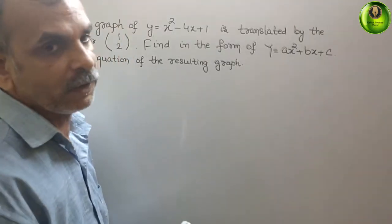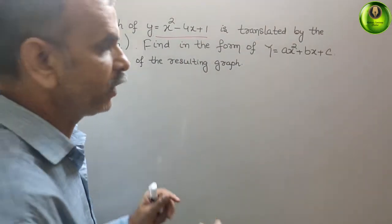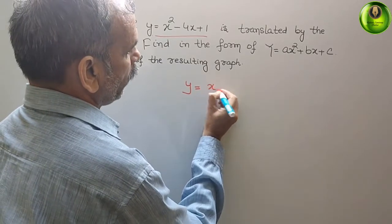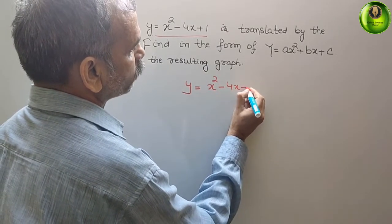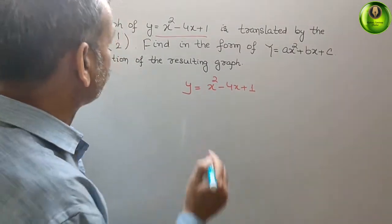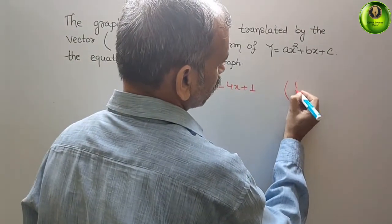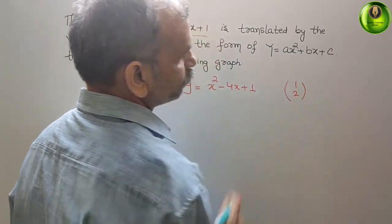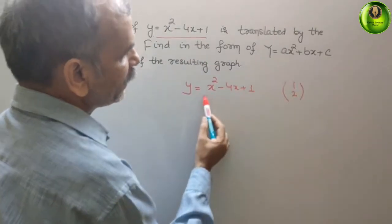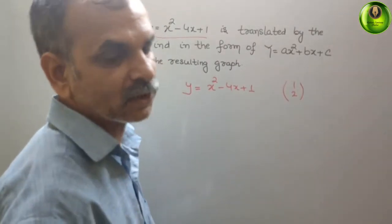Now, what they have given, they have given y equals x square minus 4x plus 1, that only we will learn, x square minus 4x plus 1, and they have given the vector also, 1, 2, this is your vector, and they have told you to find out in the similar equation that is ax square plus bx plus c, after the translation.